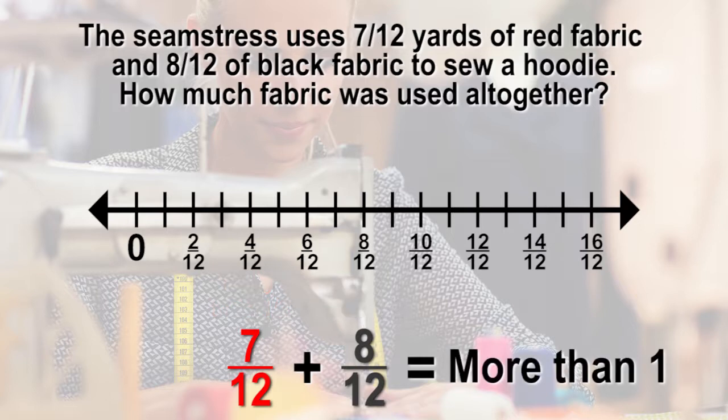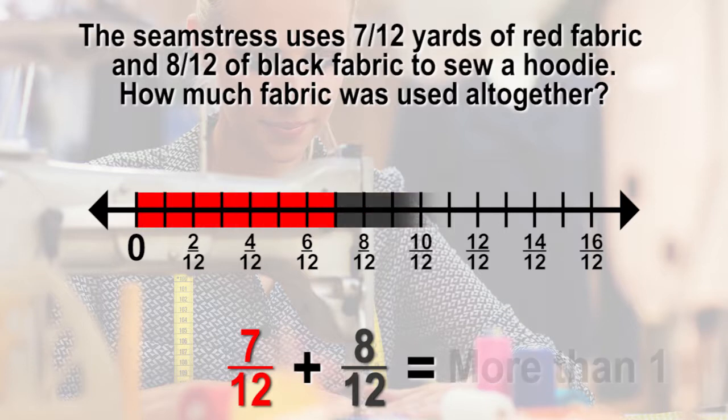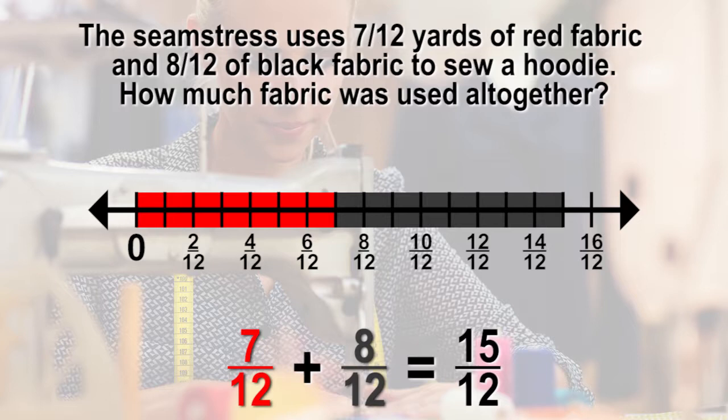The equation is 7 twelfths plus 8 twelfths equals 15 twelfths, or more than 1 yard, as estimated.